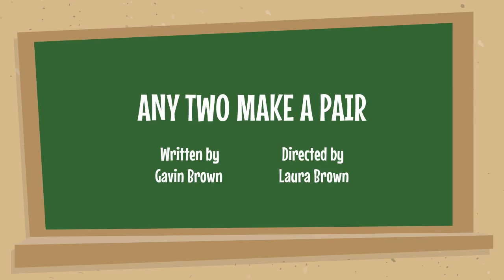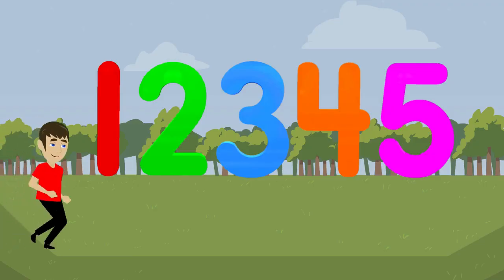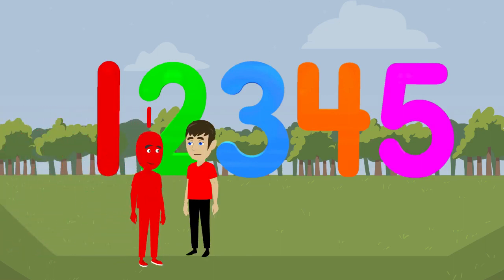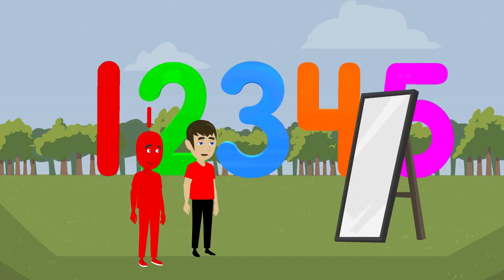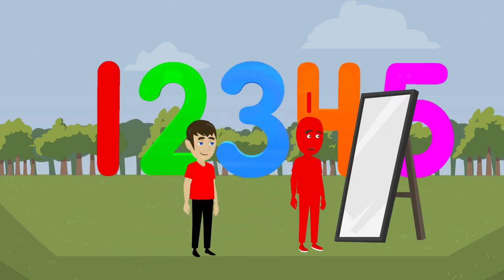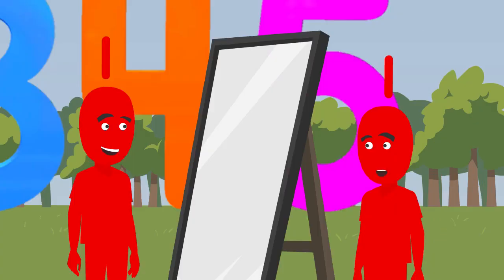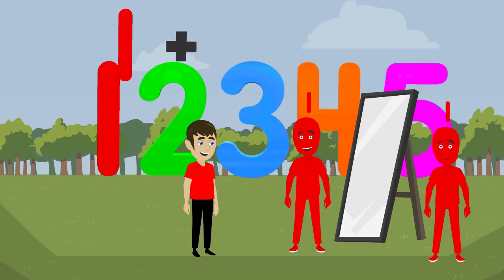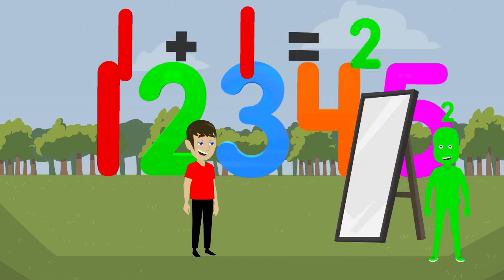Any two make a pair. We made it to number world. So, what can we do here? I don't know yet, Gavin. Wait. Is that a magic mirror? Oh. It copies me. Hello me. Cool. I'm another one. Alright then. Show them what I mean. 1 plus 1 equals 2.